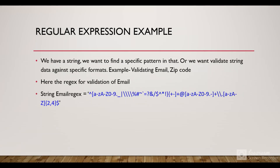Let's see an example. Say we have a string and we want to find a specific pattern in it — like validating an email or validating a zip code so that it is in a specific pattern. If we talk about the regex for validation of an email, we will pass this email regex and an email string. If that email matches the pattern we provided, our function will return true, otherwise false. This is for validating that the email is in the correct format.